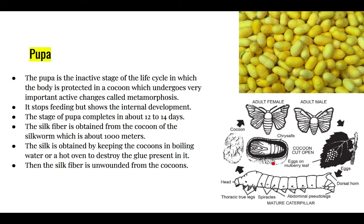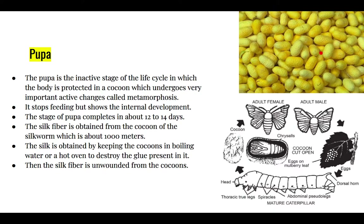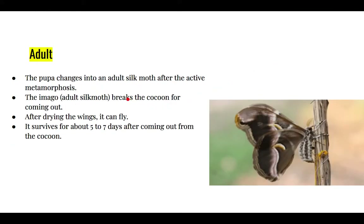The pupa is the inactive stage of the life cycle, protected by the cocoon (also called the puparium), but internal development called metamorphosis is occurring inside. It takes around 12 to 14 days to complete this stage. The silk fiber obtained from each cocoon is approximately 1000 meters. To extract the silk fiber, the cocoons are kept in boiling water or a hot oven so that the glue present between the fibers is removed, making it easy to collect the fibers. Some cocoons are not boiled so that the pupa can develop.